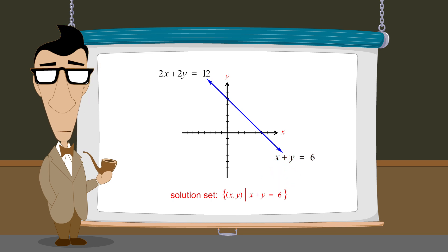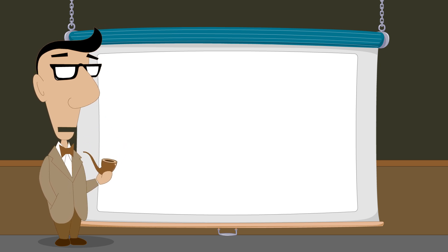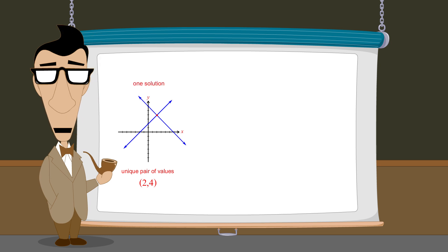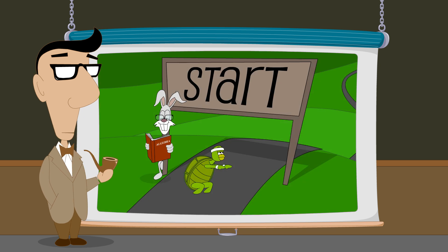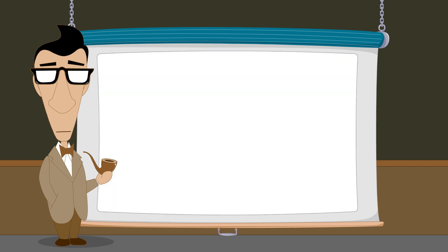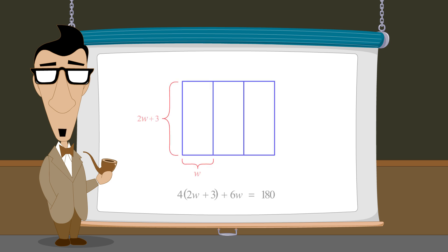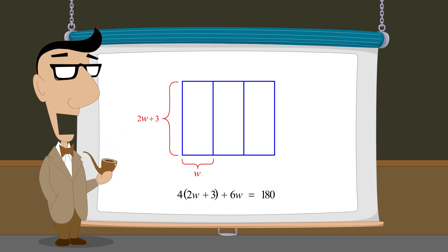In this lecture, we have seen how to interpret the results we get when solving a system of two linear equations in two variables. If solving the system produces a unique pair of values for x and y, we know that the system has one unique solution. If solving the system produces a contradiction, the system has no solutions. And if solving the system produces a statement which is always true, the system has an infinite number of solutions. As we have seen, any of these types of solutions can occur when using a system of equations to solve real-world problems. But any problem which can be solved using a system of equations can also be solved by creating a single equation with a single variable. In the next lecture, we will see what types of real-world problems are easier to solve by using a system of equations.